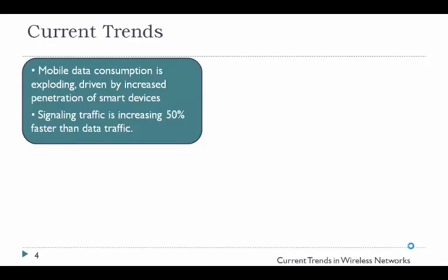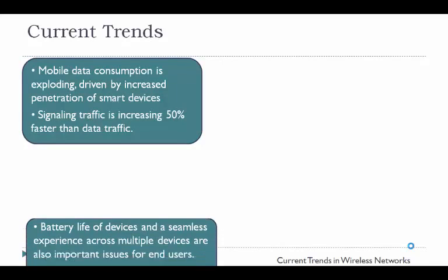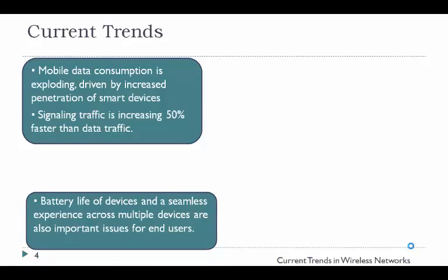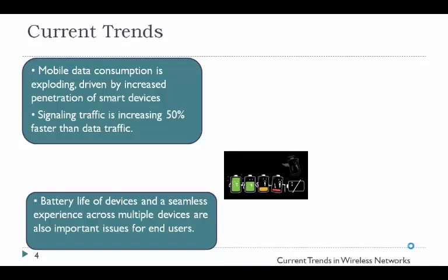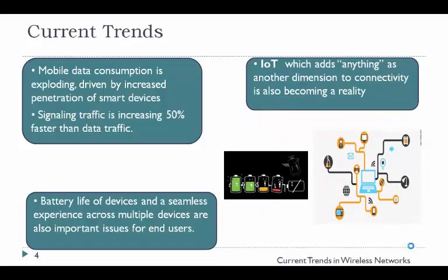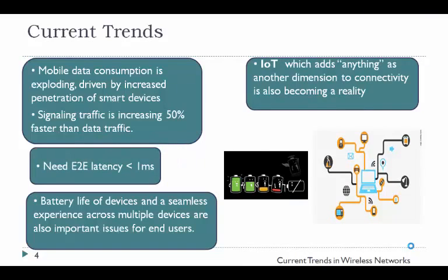So what are the current trends in technology? Mobile data consumption is exploding due to increase in number of devices and desire for anywhere, anytime connectivity. Battery life of devices is also becoming an important issue for many end users. Furthermore, the internet of things is becoming a reality. With currently existing 4G, we cannot accommodate the advances in technology. Concepts like augmented reality, real-time gaming, and autonomous cars need an end-to-end latency of 1ms, whereas with 4G the minimum latency possible is 50ms. Clearly, we need a new generation of mobile networks.